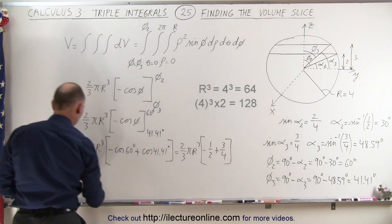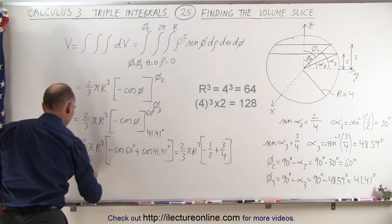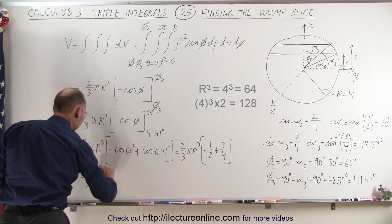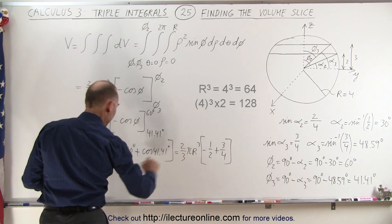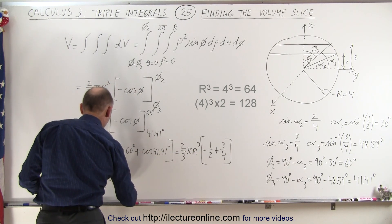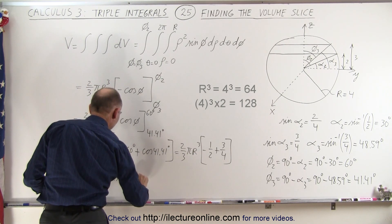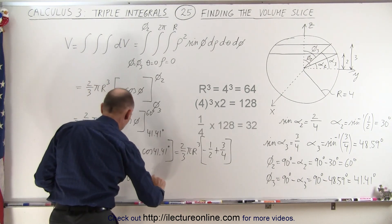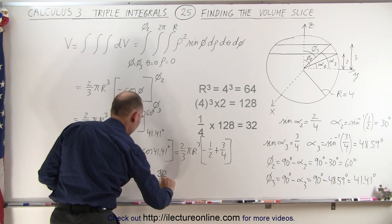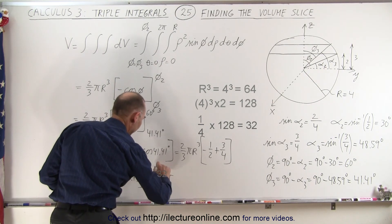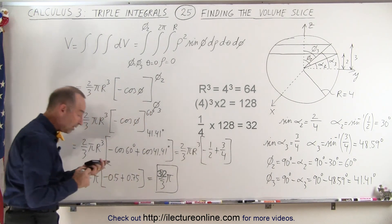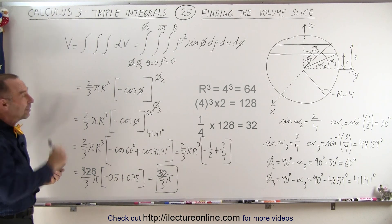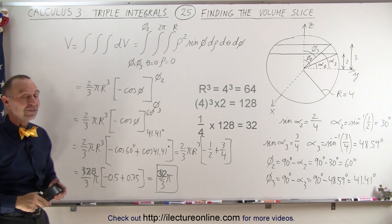negative 0.5 plus 0.75 which is basically a positive one quarter. So one quarter, that would be equal to 8/3 π, and that would then be the volume of that small slice from two to three of that particular sphere, and that's how it's done.